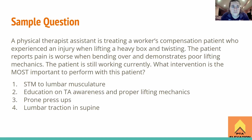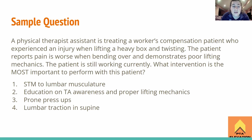Ready for the sample question? A physical therapist assistant is treating a workers' compensation patient who experienced an injury when lifting a heavy box and twisting. The patient reports pain is worse when bending over and demonstrates poor lifting mechanics. The patient is still currently working. What intervention is the most important to perform? One: soft tissue massage to lumbar musculature. Two: education on transverse abdominus awareness and proper lifting mechanics. Three: prone press-ups. Or four: lumbar traction in supine.